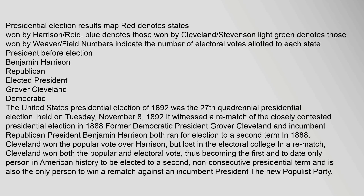The United States Presidential Election of 1892 was the 27th quadrennial presidential election, held on Tuesday, November 8, 1892. It witnessed a rematch of the closely contested presidential election of 1888.